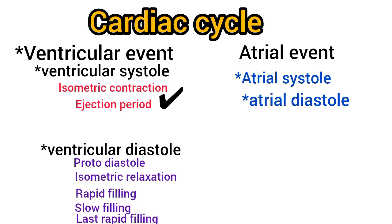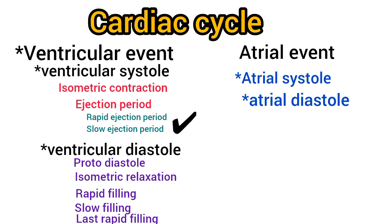The next phase is the ejection period. Due to the opening of semilunar valves and the isotonic contraction of ventricles, the blood is ejected out of both the ventricles. The ejection period has two stages. The first stage, or the rapid ejection period, starts immediately after the opening of the semilunar valves, during which a large amount of blood is rapidly ejected from both ventricles. The second stage is the slow ejection period, during which blood is ejected slowly with much less force. The ventricles are not completely emptied at the end of the ejection period, and some amount of blood remains in the ventricles.